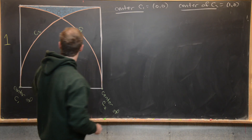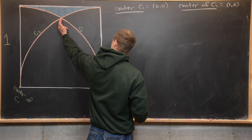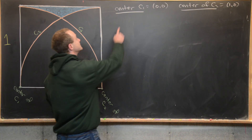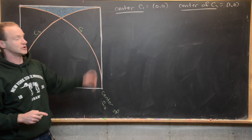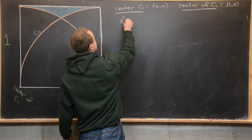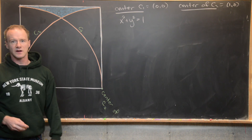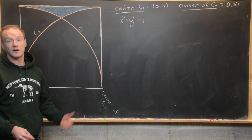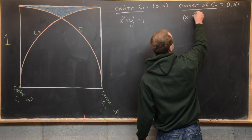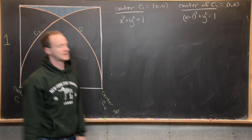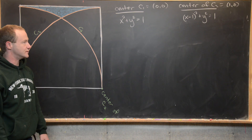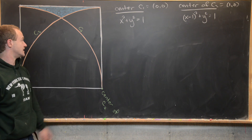Now we want to figure out what this intersection point is. It's pretty clear it should have x-coordinate one-half, but let's calculate it for completeness. The equation of C1, centered at the origin with radius one, is x² + y² = 1. Similarly, C2 gives us (x − 1)² + y² = 1, since we shift right one unit. We want the values of x and y that satisfy these equations simultaneously.